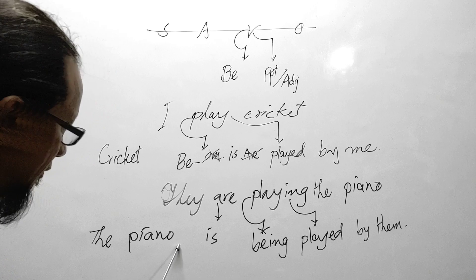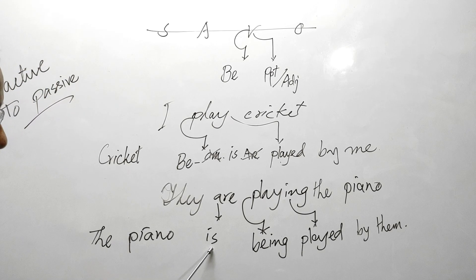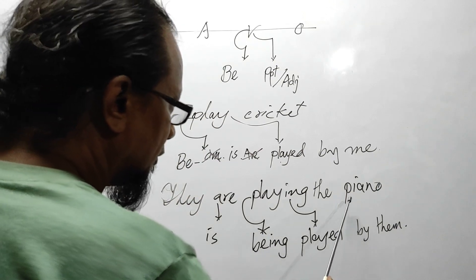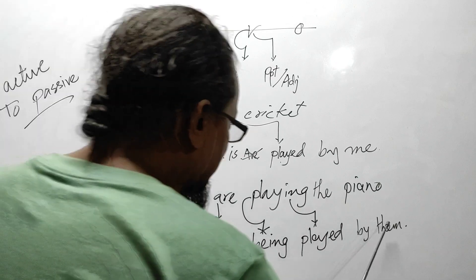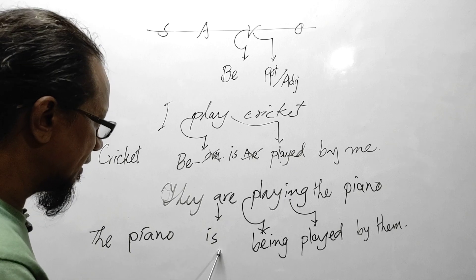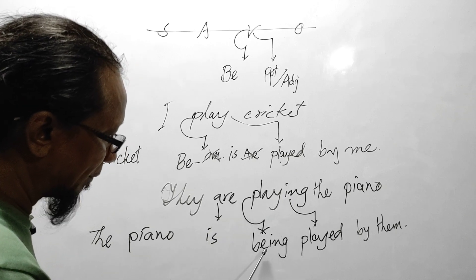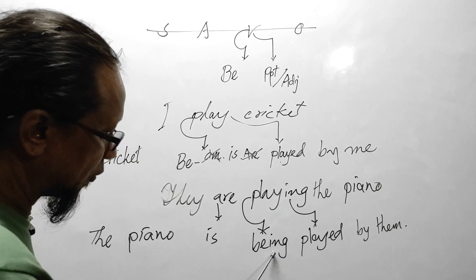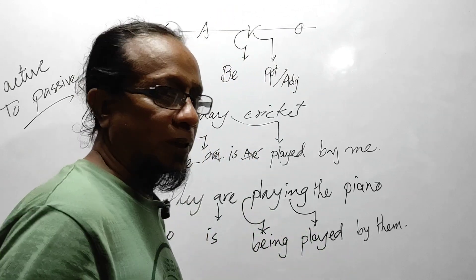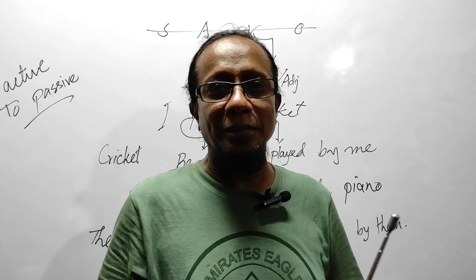The auxiliary verb 'is' remains because 'the piano' is the new subject here: 'the piano is being played by them.' The auxiliary verb is never changed, and the principal part is replaced by another principal part 'B' — since it is '-ing' form, it should be 'being,' and it must go as past participle.